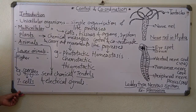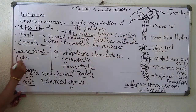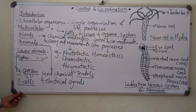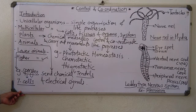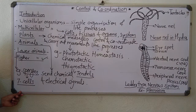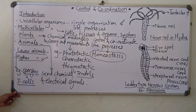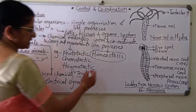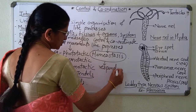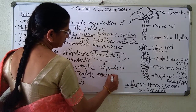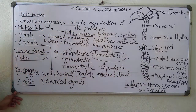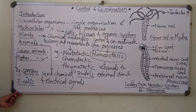In higher animals, there are cells, tissues, organs, and systems. All the systems, tissue cells, and organs must work together to bring about coordination inside the body to maintain homeostasis.